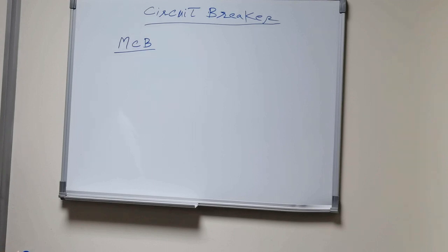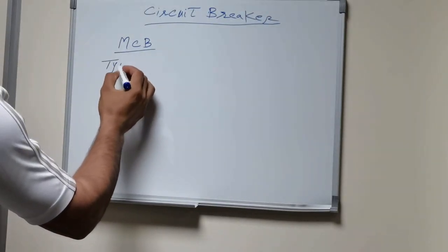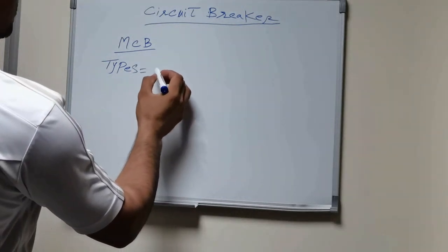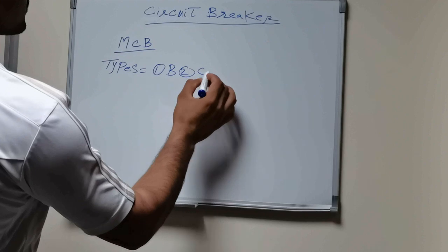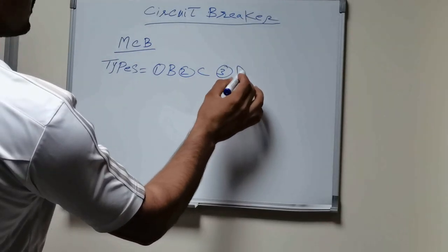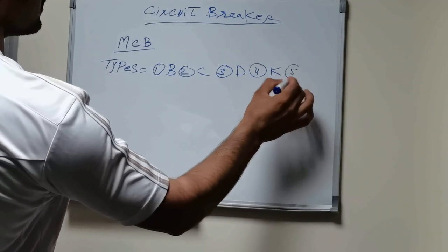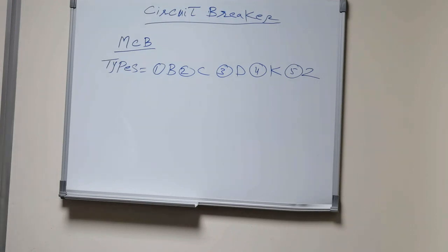There are many types of Miniature Circuit Breaker including Type B, C, D, K, and Z. The types of MCB are based on its current time curves.